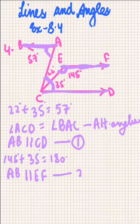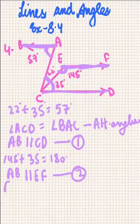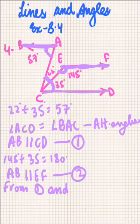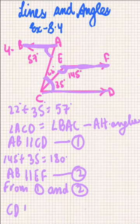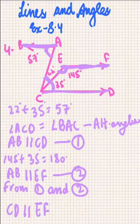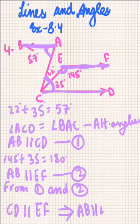So this is our second statement. From the first and second, we can say that CD is parallel to EF. When we get CD parallel to EF, we can employ that AB is parallel to EF.